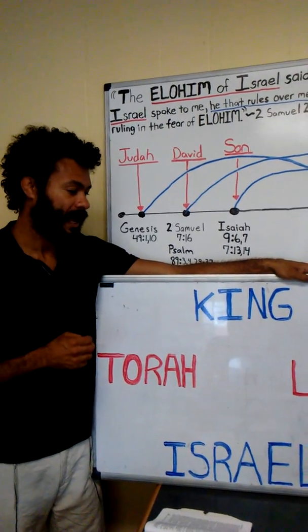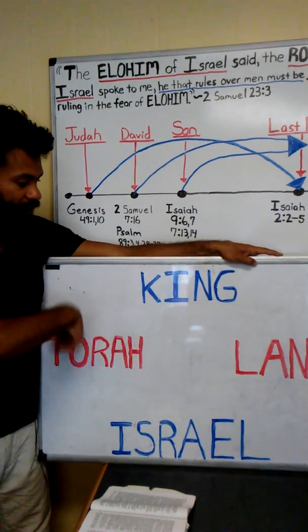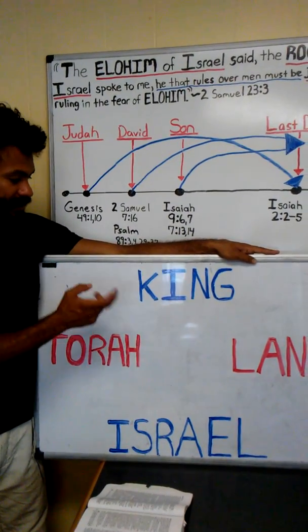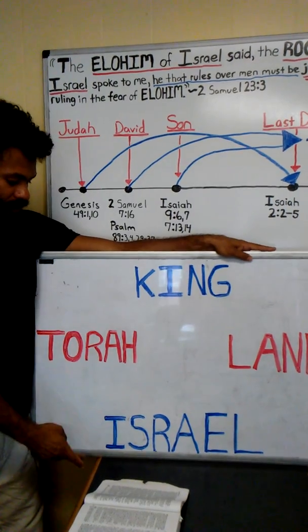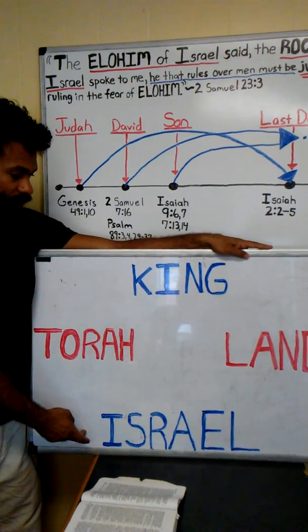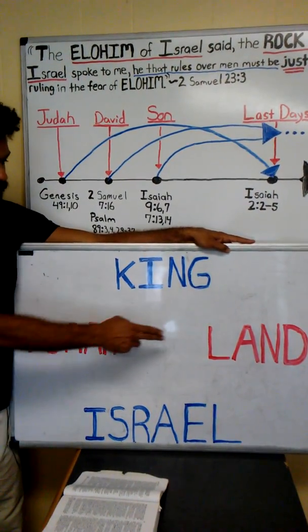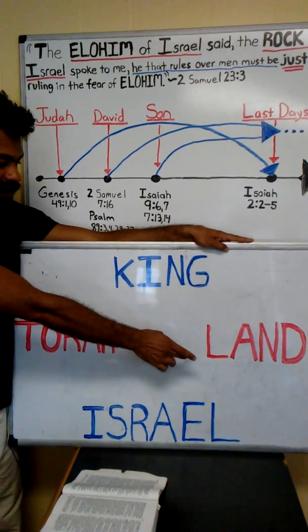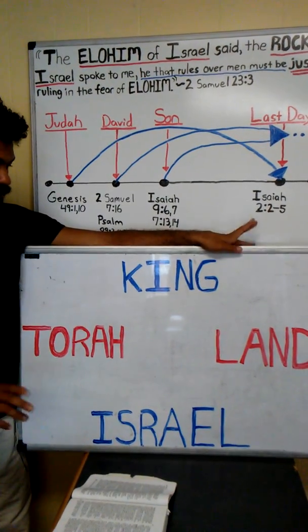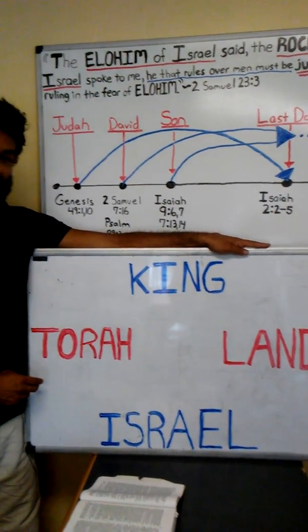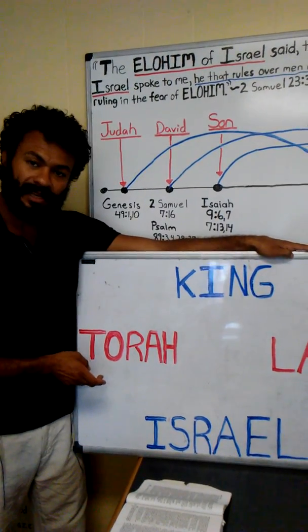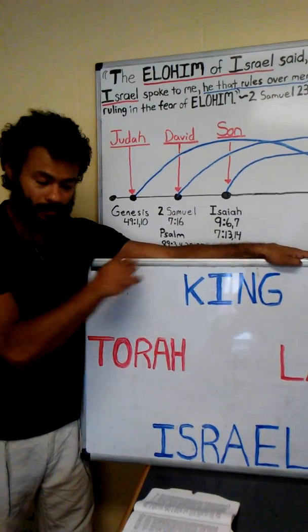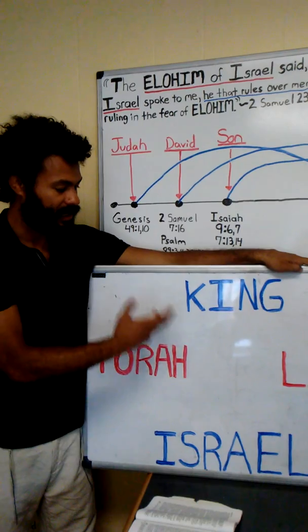We want to find out more about the good news of the kingdom. Today we're looking at the king. We've talked about how in the kingdom you have a king, you have your people—in this case Israel—you have a place designated for the kingdom, a land which is the promised land defined in Genesis 15, and we also see a Torah or law for the people.